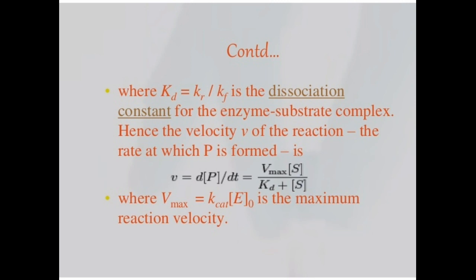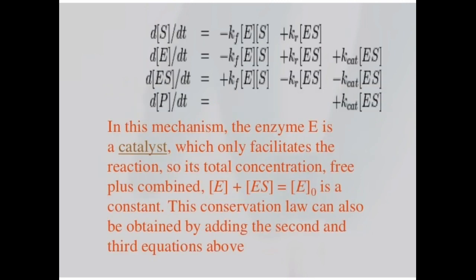Hence the velocity of the reaction minus the rate at which the product is formed is V is equal to dP dT Vmax by S KD plus S where Vmax equals. In this mechanism the enzyme E is a catalyst which only facilitates the reaction, so its total concentration, free plus combined, is a constant. This conservation law can also be obtained by adding the second and third equations above. So this is the derivation you can see of the Michaelis-Menten constant.